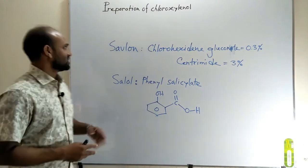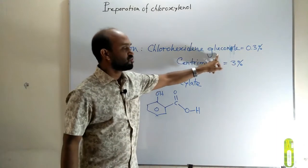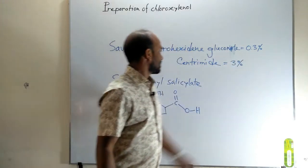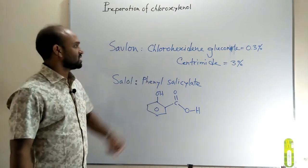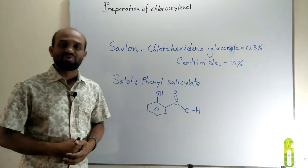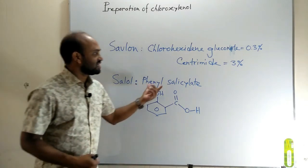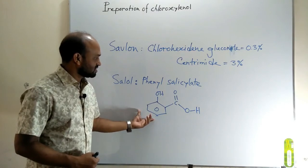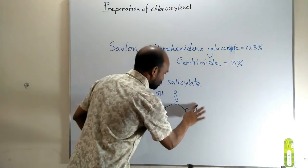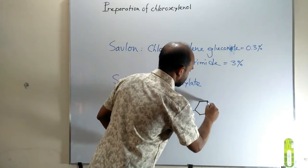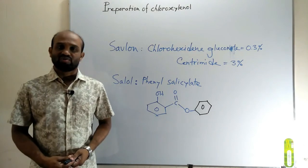Two more points: one is Savlon and another one is Salol. Savlon is a mixture of chlorhexidine gluconate at 0.3% and cetrimide at 3%. It is used in surgery cases, especially for wound washing or mouth washing. Another one is Salol. Salol is another antiseptic and it is phenyl salicylate. This is salicylic acid or orthohydroxybenzoic acid. When the hydrogen is replaced by a phenyl group, we get phenyl salicylate. That's all about Dettol.